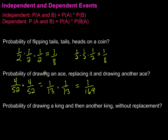So, my probability of drawing an ace, replacing it, and drawing another ace would be 1 out of 169.